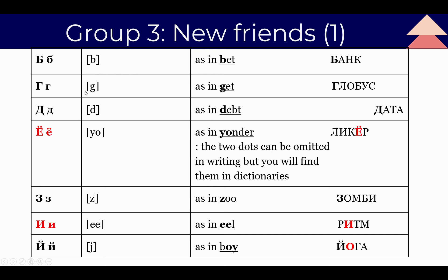The next letter is Г, sounds 'G,' as in 'get.' The Russian word: Г, Л, О, Б, У, С — Глобус. The globe. Next is Д, looks different from English but sounds like 'D,' as in 'deer.' The Russian word: Да-та — Дата, the date.